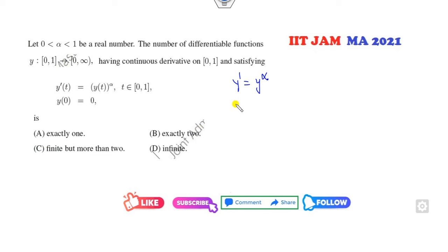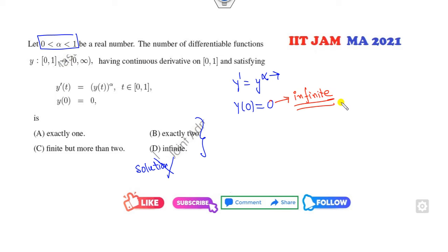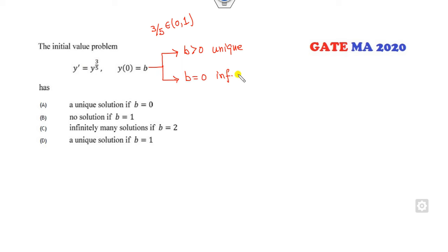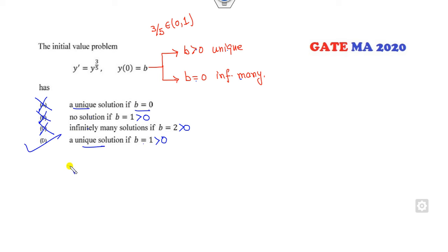Again, you can see this condition is given. From the options, they are not asking you to find the solution. Check about alpha — it lies between 0 and 1. Whenever B is greater than 0, you get a unique solution. Whenever B equals 0, you get infinitely many solutions. B equals 1, which is greater than 0, so unique solution is the right answer.